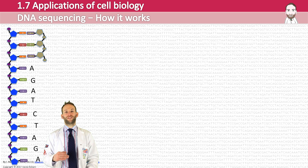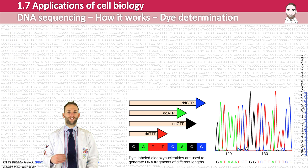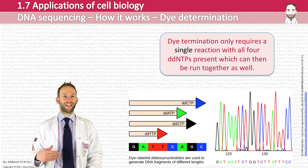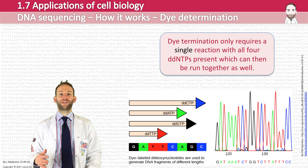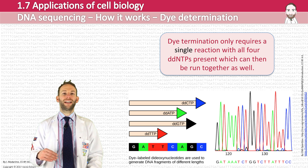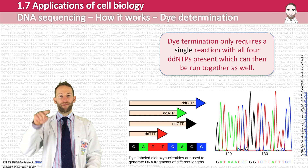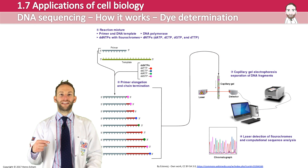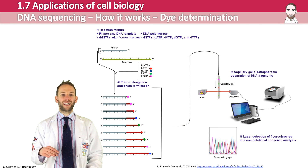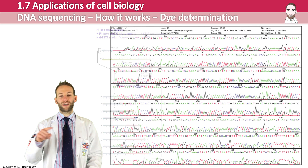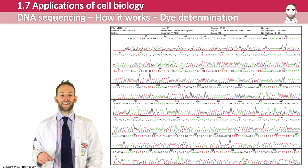A much newer method is called dye termination. In this method, each of the four DDNTPs is fluorescently labeled with a different color, and the fragments are put through capillary electrophoresis. The dye-labeled fragments move in single file past a laser, and a camera detects their color, generating graphs that show the sequence as peaks of different colors.